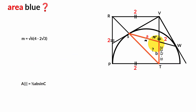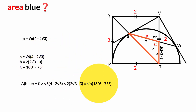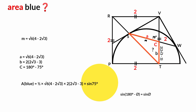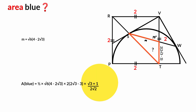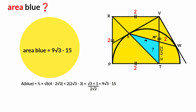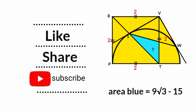So A = root 6 times (4 minus 2 root 3), B = 2 times (2 root 3 minus 3), and angle C = 180 minus 75 = 105 degrees. Using sin(180 minus 75) = sin 75 = (root 3 + 1) / (2 root 2), simplifying gives the blue area equal to 9 root 3 minus 15 square units. Thank you for watching — please like, share, and subscribe, and turn on notifications.